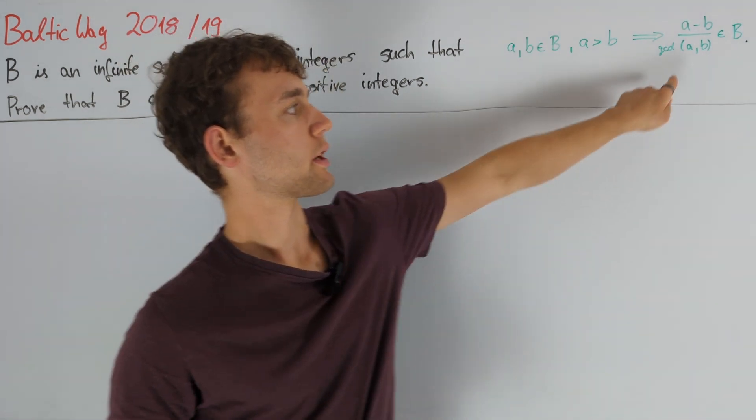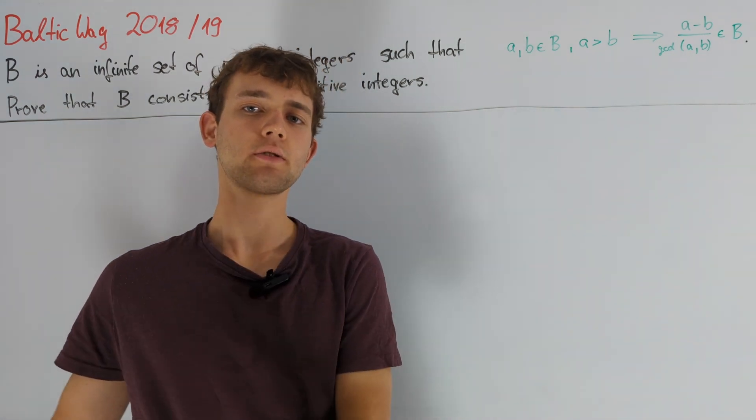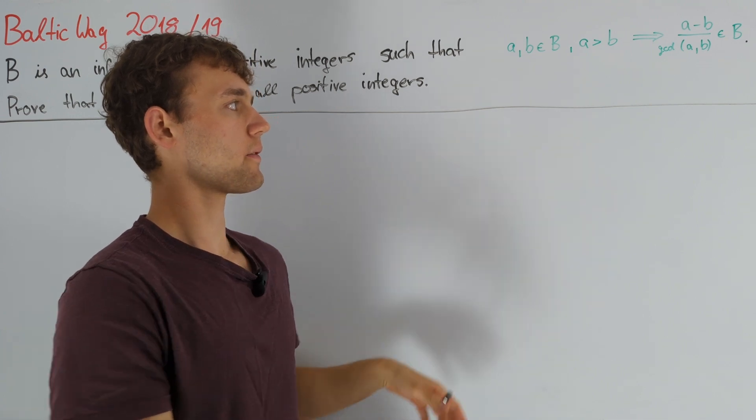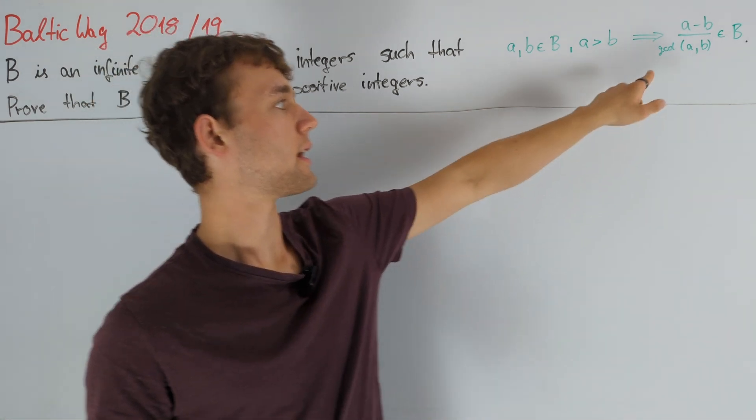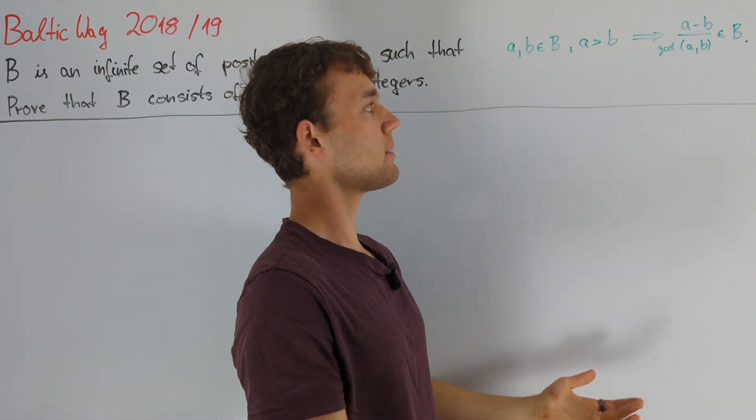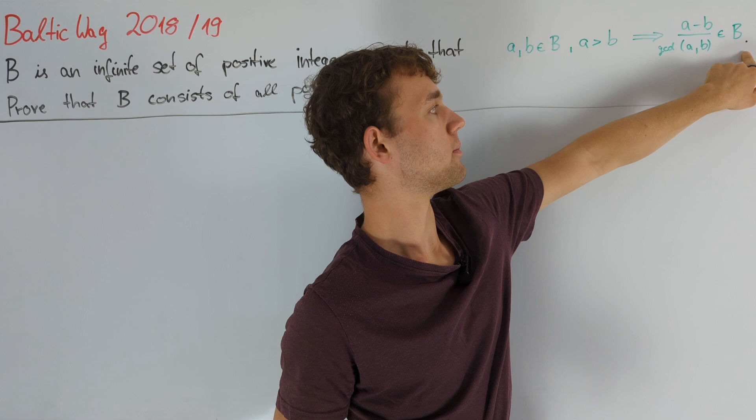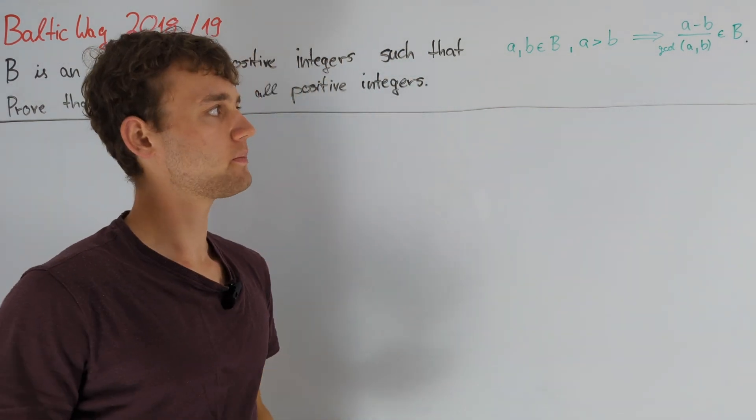Looking at this expression, we see the greatest common divisor of a and b. For general a and b, we don't perfectly understand the behavior of the greatest common divisor of a and b, except for maybe that it divides a and b, and therefore it must also divide a minus b. So, since a is greater than b, this is indeed a positive integer, which is good.